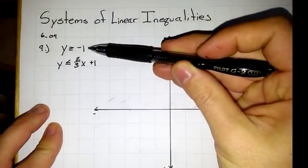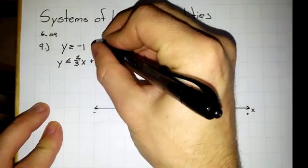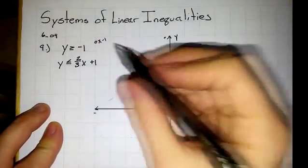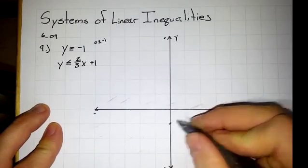There's no x here, so this is really saying 0x minus 1 if you're looking for slope intercept. Y-intercept is at negative 1, but there's a slope of 0.